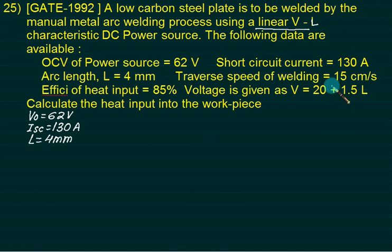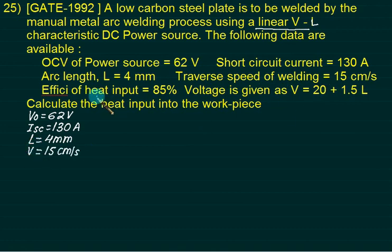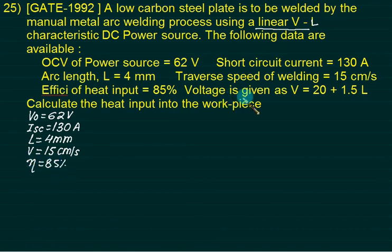What is the traverse speed? 15 — that is velocity. Velocity, we are using capital V: 15 cm. What is the efficiency? We have been given only one efficiency that equals 85. Voltage is given as this value.